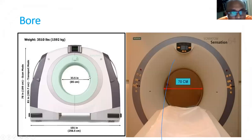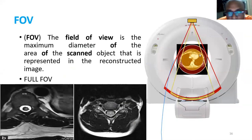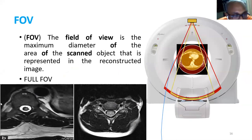Bore is the total opening aperture of the CT or MR scanner. FOV, or field of view, is the maximum diameter of the area of the scanned object represented in the reconstructed image. A small FOV gives good resolution but covers a limited area. A full FOV captures the total image. For CT-MR fusion in stereotaxy practice, we need to take the full FOV.